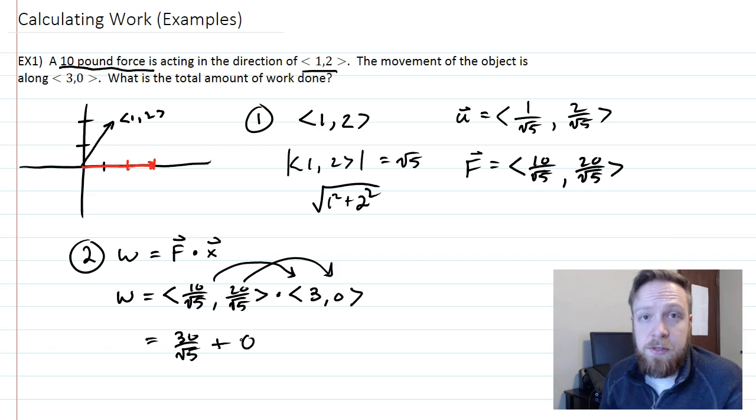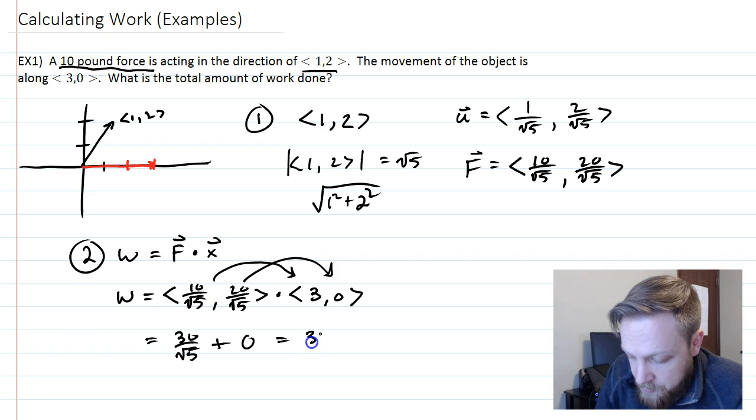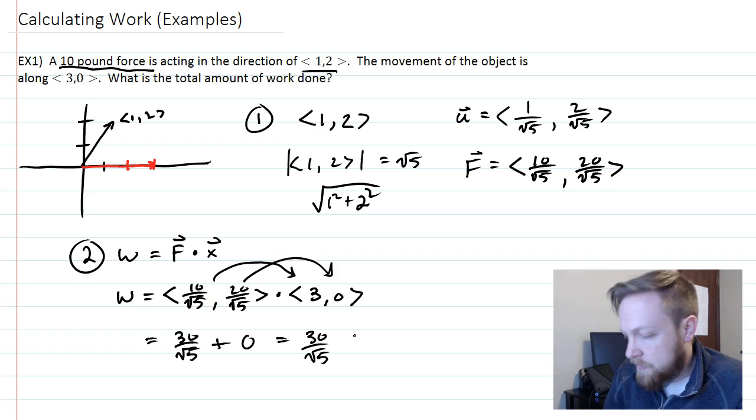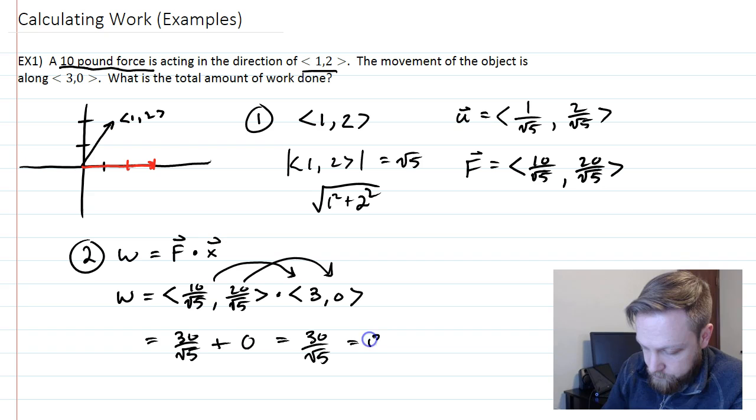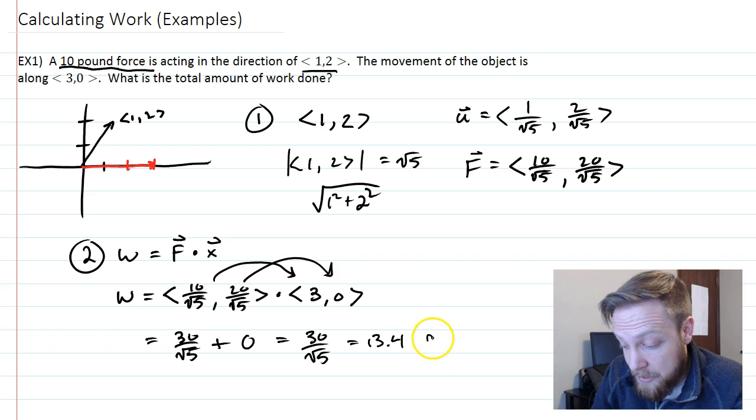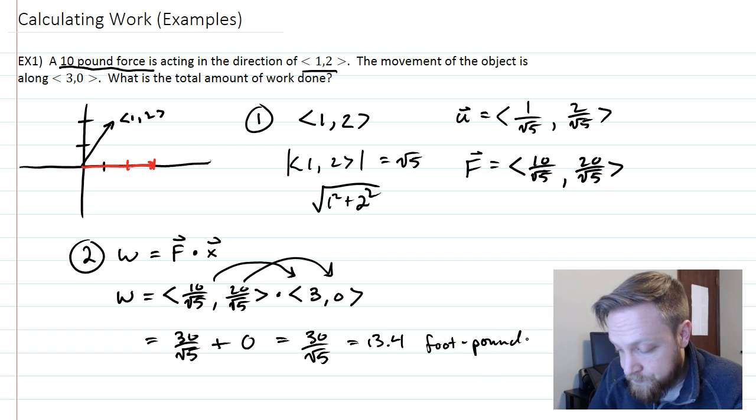So in this case the y part doesn't add anything to the work. The answer is going to be 30 divided by √5, or if you rationalize it, 30√5 over 5. No matter what you simplify it to, 30 divided by √5 is going to be 13.4. And I looked it up, the units here, if you are doing pounds and feet, this is called a foot-pound. Very creative unit.